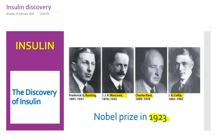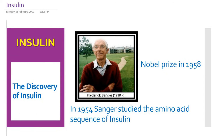That is a brief history of insulin discovery. Later, during 1954, Frederick Sanger studied the amino acid sequence of insulin. Insulin is a peptide hormone, meaning it is made up of amino acids. Sanger was able to identify the amino acid sequence, and for this work he was awarded the Nobel Prize in 1958.